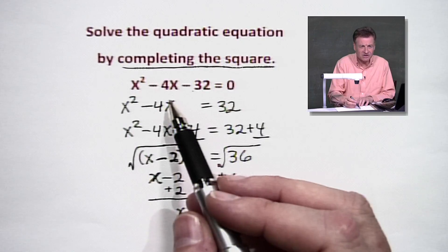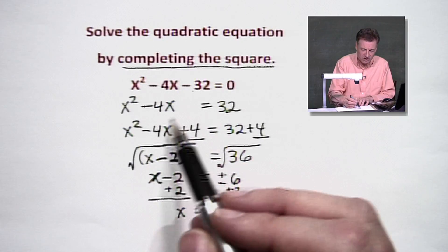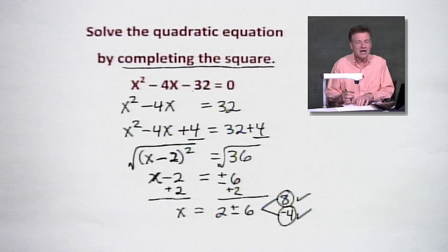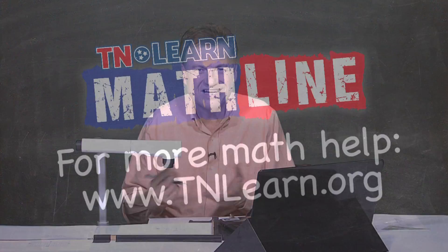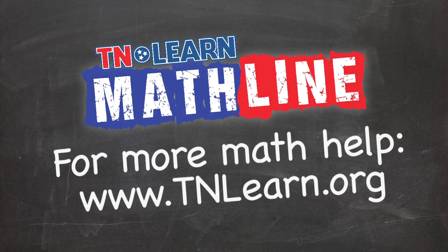With an even number here, you might have a fraction if you have an odd number here in the middle. But this one worked out really sweet and easy for us to see. That's the process. For more math help, visit tnlearn.org.